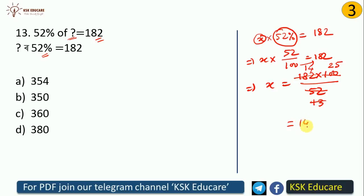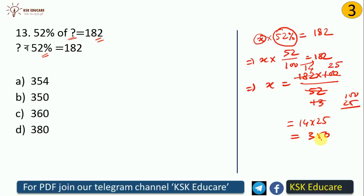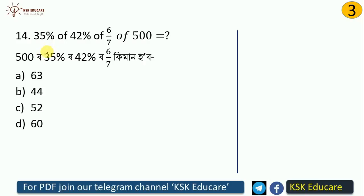Working through the division: 182 divided by 52 into 100. Simplifying step by step — 15 into 25, 14 into 25 — gives us 350. So the answer is 350, and Option B is correct.